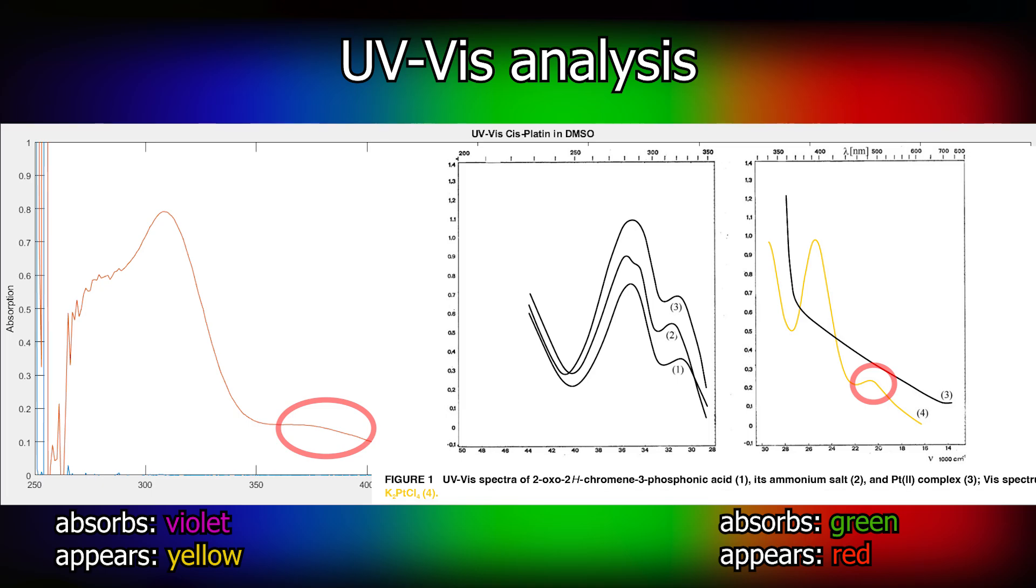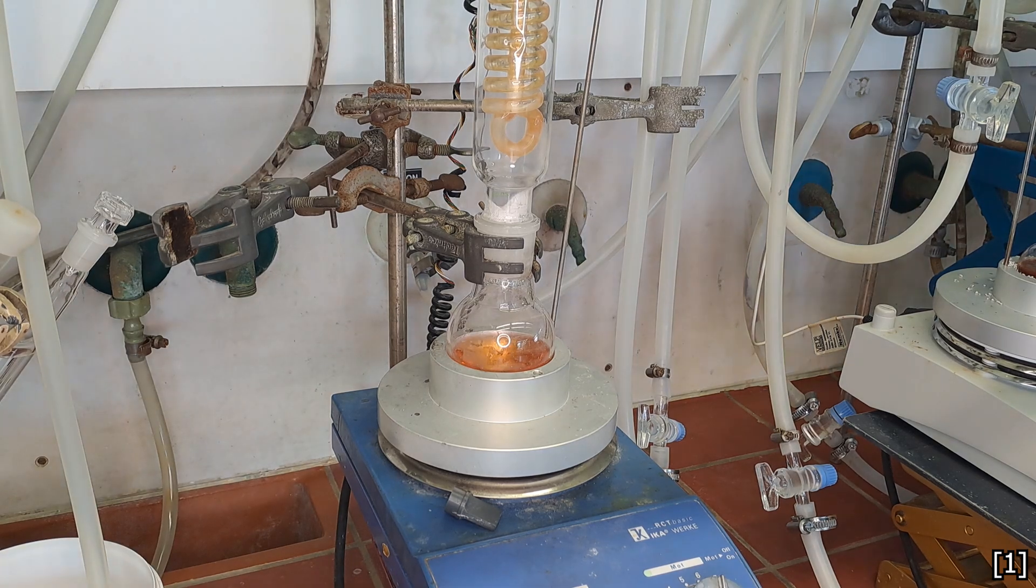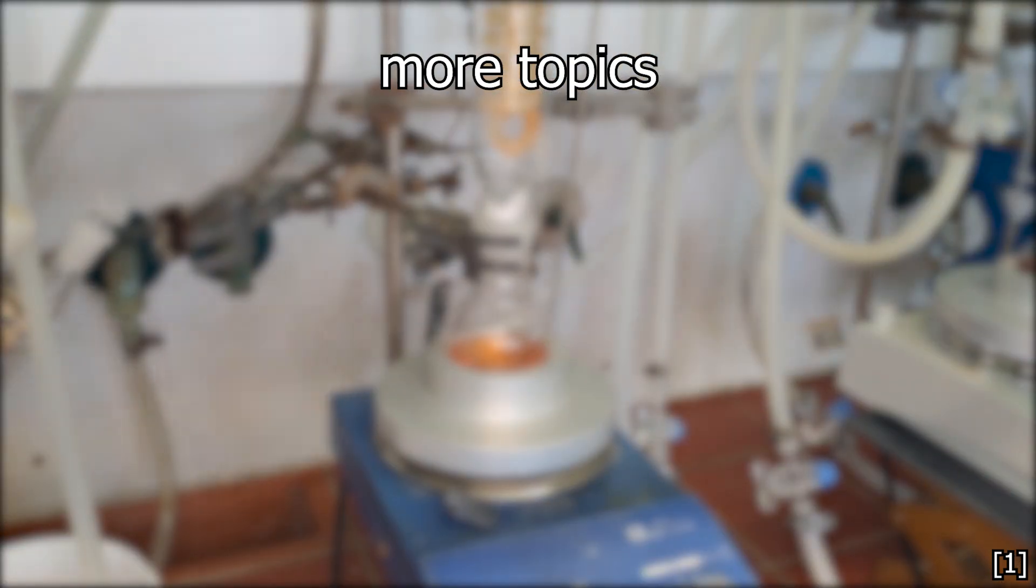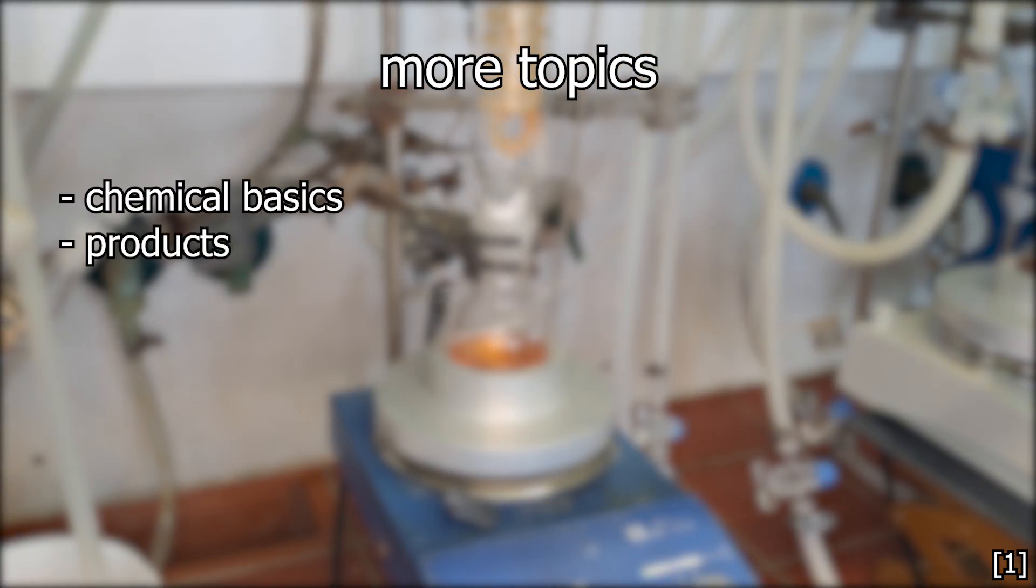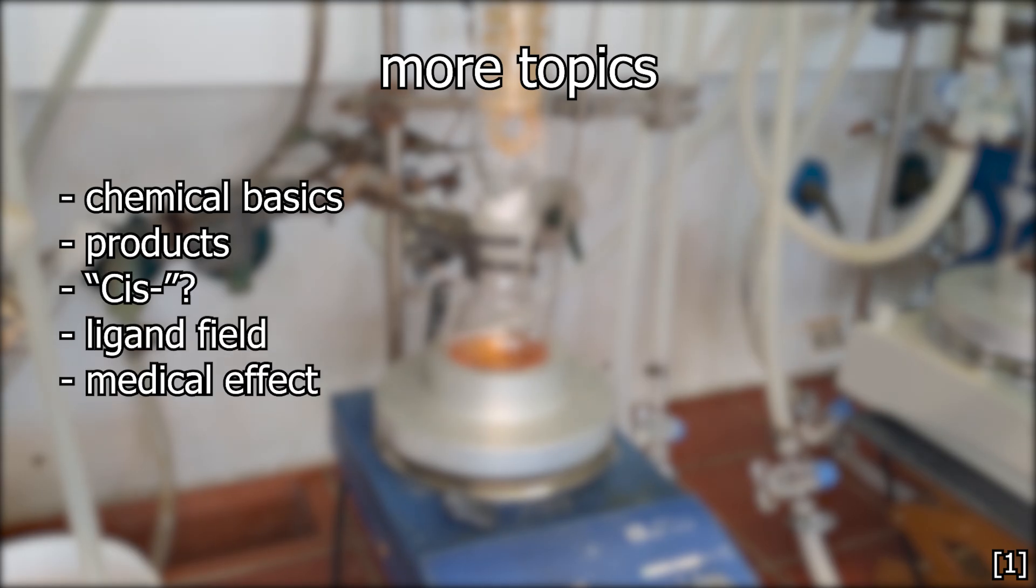This confirms that it's no longer the starting material. However, proving that it's specifically the cis-isomer is more challenging. For that, the trans effect, or just chemistry in general, is used as justification that we conclude it's actually the cis-isomer. Let's first talk about some chemical basics with this compound as a beautiful example, and then afterwards we can discuss fundamentals on how it works as a cancer drug.